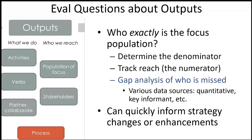Asking these kinds of questions about reach can pretty quickly inform strategy changes or enhancements. In the medication disposal bag example, we can put bags in apartment building lobbies, work with landlords to ensure access for renters, and work with shelters or community organizations serving individuals who experience homelessness. But if we don't take time to reflect on who we're missing, we might miss this opportunity to make strategy changes or enhancements. These kinds of activities don't have to cost a lot of money. It can just be a matter of thinking about it a little bit differently and being intentional about pondering who we're missing.